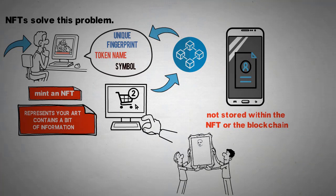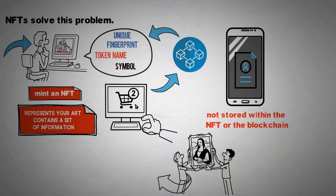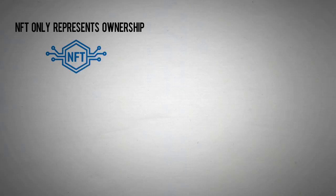Now here's where NFTs become weird. When you buy an NFT that represents artwork, you don't get a physical copy of it. Most of the time, everyone can download a copy for free. The NFT only represents ownership, and that is recorded in a blockchain so nobody can tamper with it.